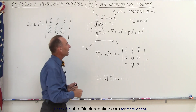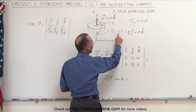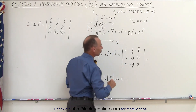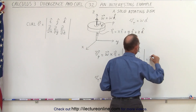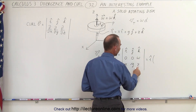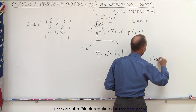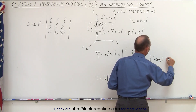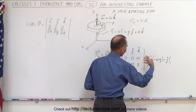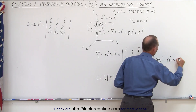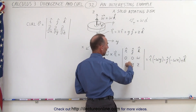Let's calculate that. For omega we only have one component in the k direction, and for the position vector we have x, y, and z in the i, j, and k directions. The cross product gives us: i times (0*z − omega*y), which is −omega*y; minus j times (0*z − omega*x), and since we have a minus sign that cancels to give −omega*x for the j term; and in the k direction the result is zero.